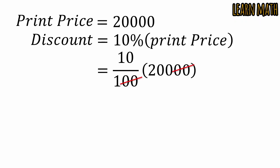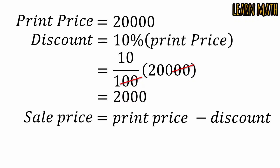So the sale price is equal to print price minus discount. Print price is equal to 20,000 minus 2,000, it is equal to 18,000. Now according to the question, the gain is 25%.